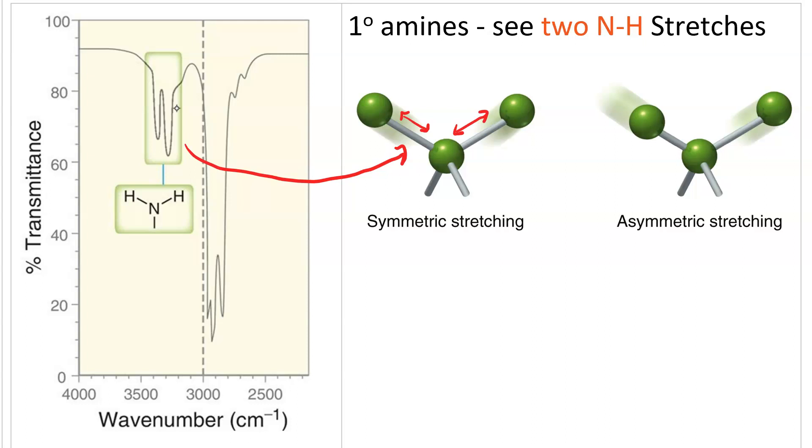The asymmetric stretch, on the other hand, one bond is lengthening at the same time the other bond is shortening. That's a smaller change in dipole moment. That's that signal.